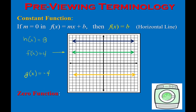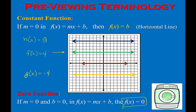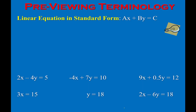The zero function, f(x) = 0, is the horizontal line that lies on the x-axis. Now, the other thing we need to look at is determining whether an equation is in standard form. If you remember from Algebra 1, the purpose of standard form is to follow a set of rules so that identical equations look the same. The first rule is that x and y need to be on the same side of the equation, written as ax + by = c — the constant is on the other side.